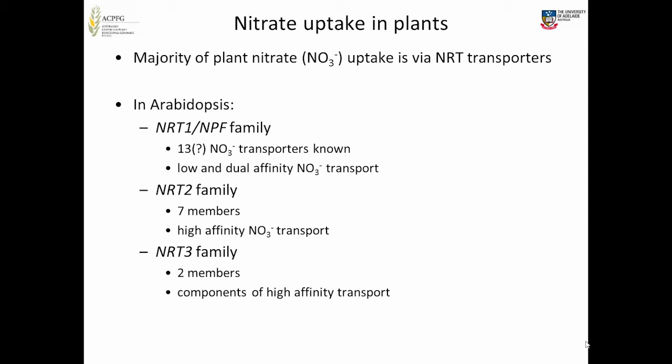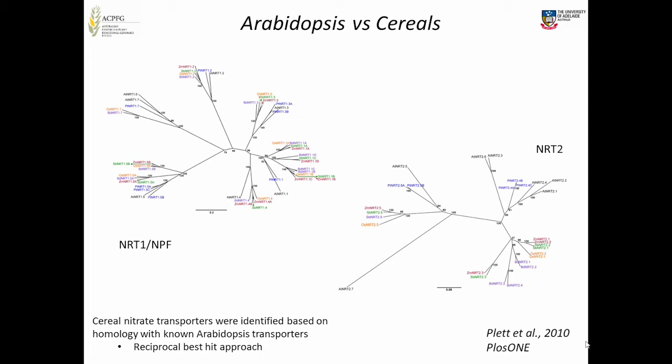We knew that for Arabidopsis, but didn't know anything about cereals. So we started with some bioinformatic work looking at the published genomes of monocots and dicots. We had the NRT1s and NRT2s. The NRT1s mapped out fairly similarly, but what was interesting was that the NRT2s showed a big dichotomy between monocots and dicots — the Arabidopsis transporters clustered separately from the cereal ones.